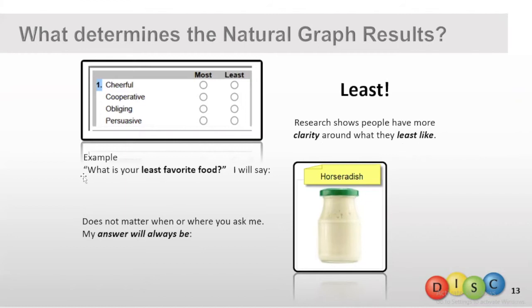So, for example, if you ask me what's my least favorite food or condiment, I'm going to say horseradish. If you asked me yesterday, it would have been horseradish. If you ask me tomorrow, it's horseradish.